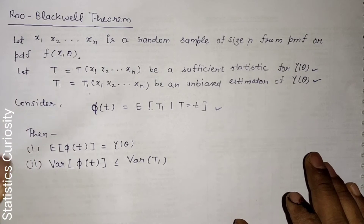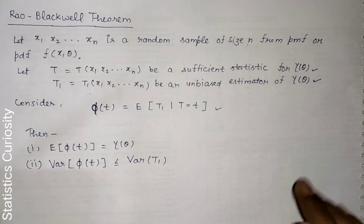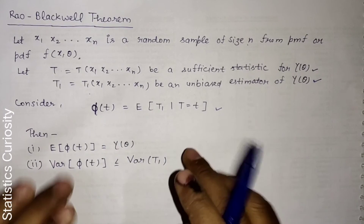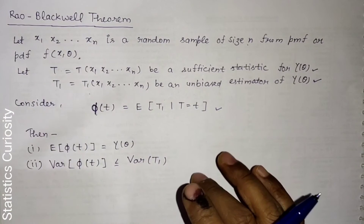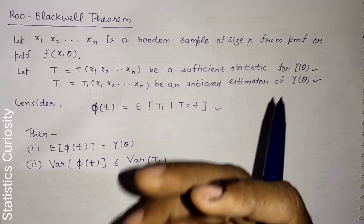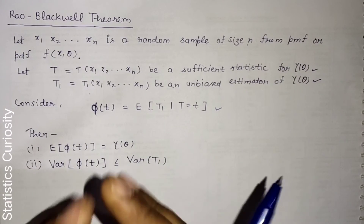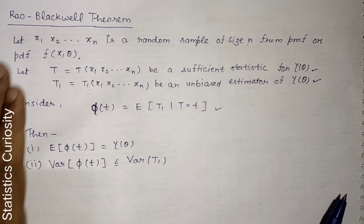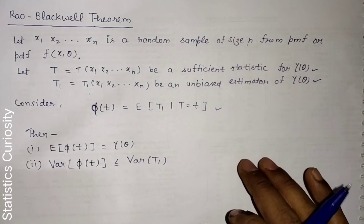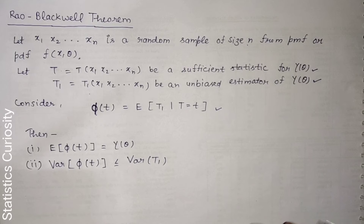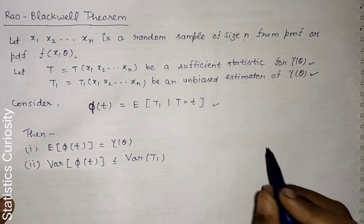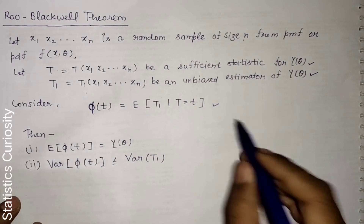So the Rao-Blackwell theorem gives us a function phi(T) that is an unbiased estimator with minimum variance — essentially yielding a minimum variance unbiased estimator. This is the statement of the Rao-Blackwell theorem.